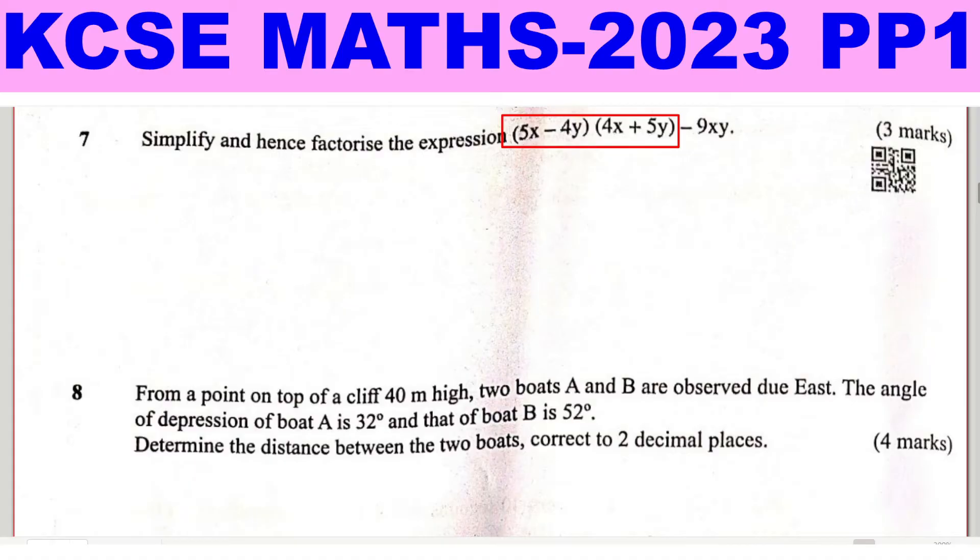So 5x minus 4y times 4x plus 5y. Let's expand this. How to expand it? We take 5x multiply by 4x plus 5y, then you take negative 4y times 4x plus 5y.